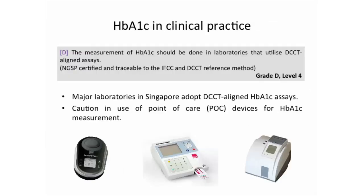In clinical practice, we recommend HbA1c measurement be done in laboratories utilizing DCCT-aligned assays — meaning NGSP certified and traceable to the IFCC or DCCT reference method. If you send blood work to major labs in Singapore, most use NGSP-certified assays. However, for point-of-care devices, please check the manufacturer to confirm whether the assay is DCCT-aligned. If it is aligned, it should not be a problem.